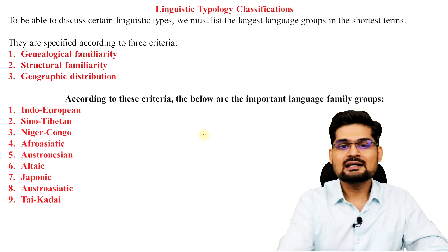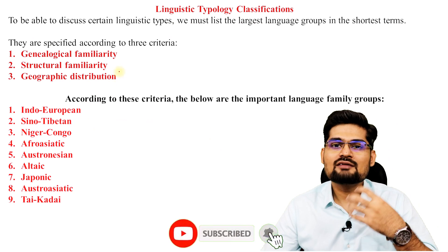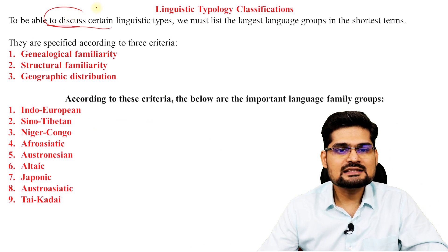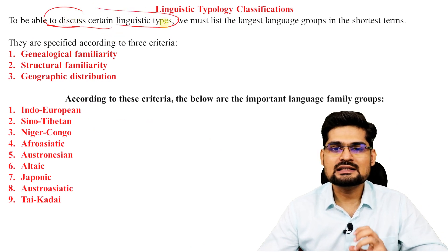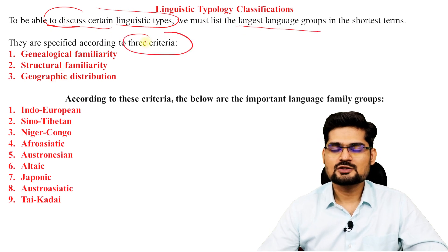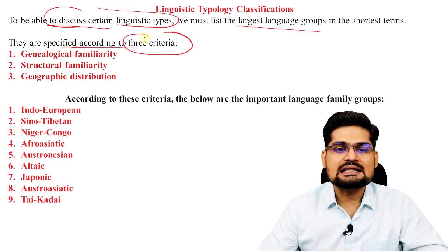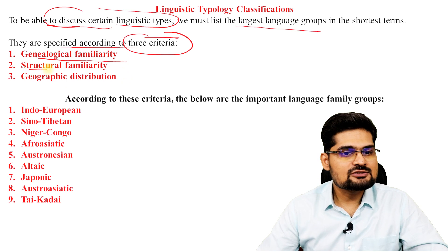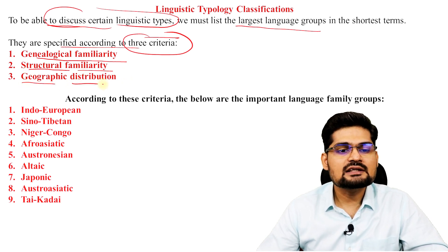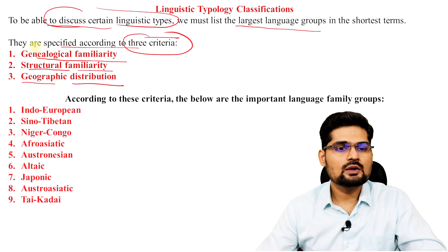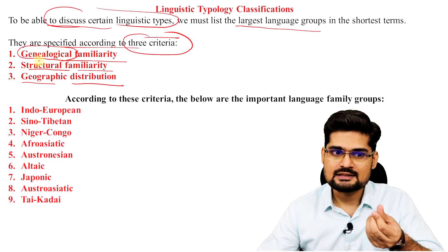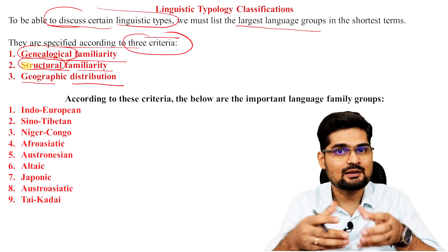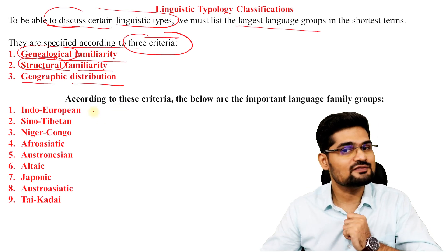Let's elaborate on this linguistic typology classification — how have languages been classified in a spatial connotation? To discuss certain linguistic types, it's important to understand large language groups. They are specified according to three criteria: genealogical familiarity, structural familiarity, and geographic distribution. One is based on genealogy — the genesis and origin. Another is based on structure and grammatical composition. The third is geographic distribution of that language.